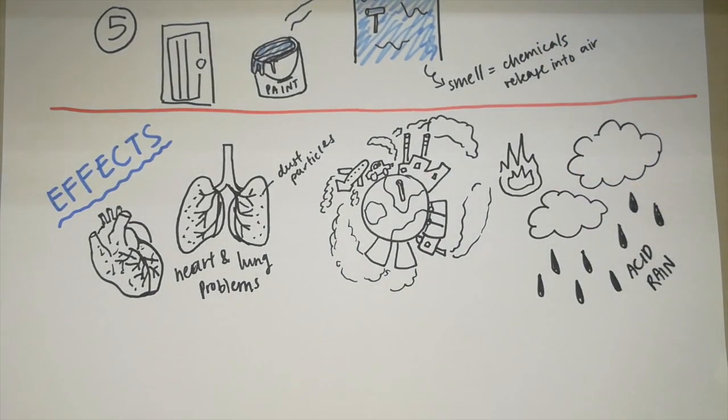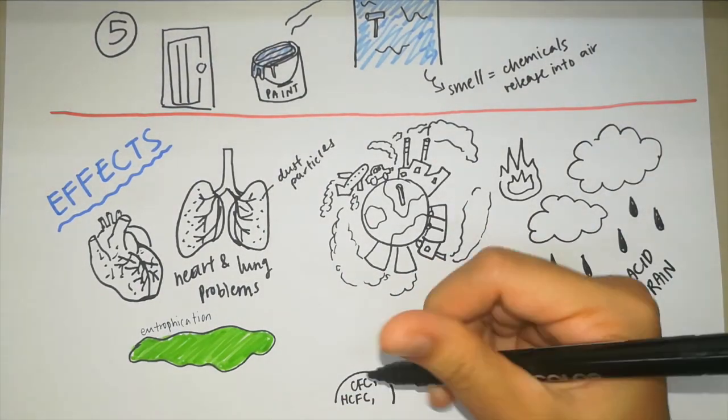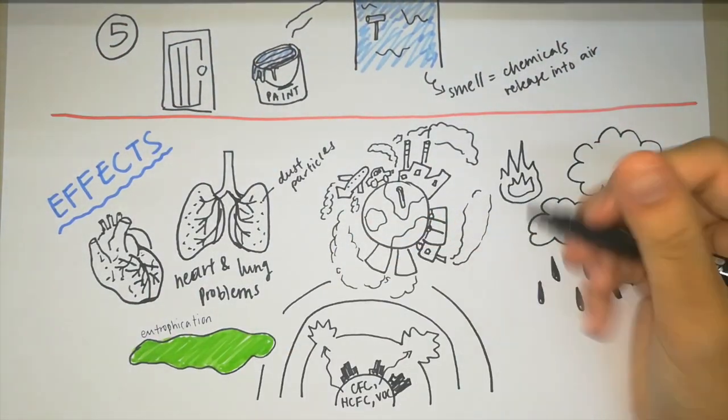Global warming, acid rain, eutrophication, effect on wildlife, and ozone depletion are all other effects of air pollution.